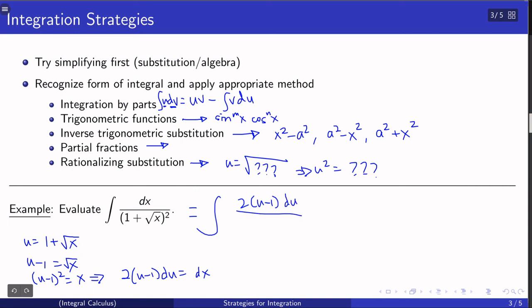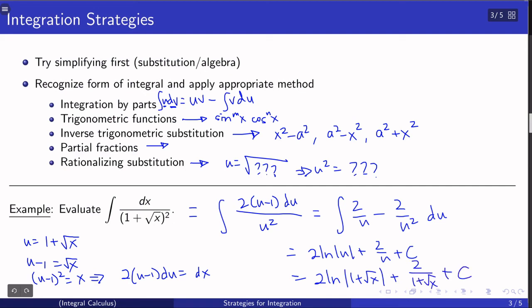1 plus root x squared. Well, 1 plus root x is u. So that's u squared. And now I can break it up into an easy integral. So that's 2 ln u plus 2 over u plus C. And now you plug in your 1 plus root x for u. And that's it. Again, you can always check your work. Take the derivative. You'll see that you get the same thing back.